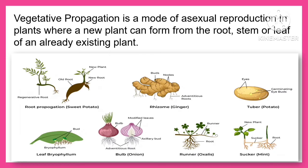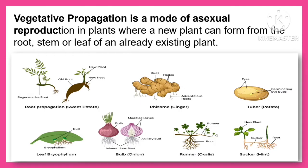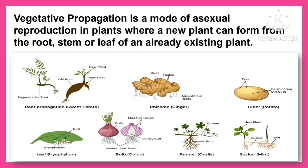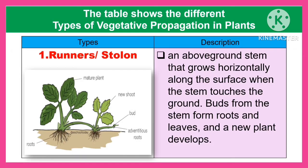Vegetative propagation is a mode of asexual reproduction in plants where a new plant can form from a root, stem, leaf, or an already existing plant. The table shows the different types of vegetative propagation in plants.